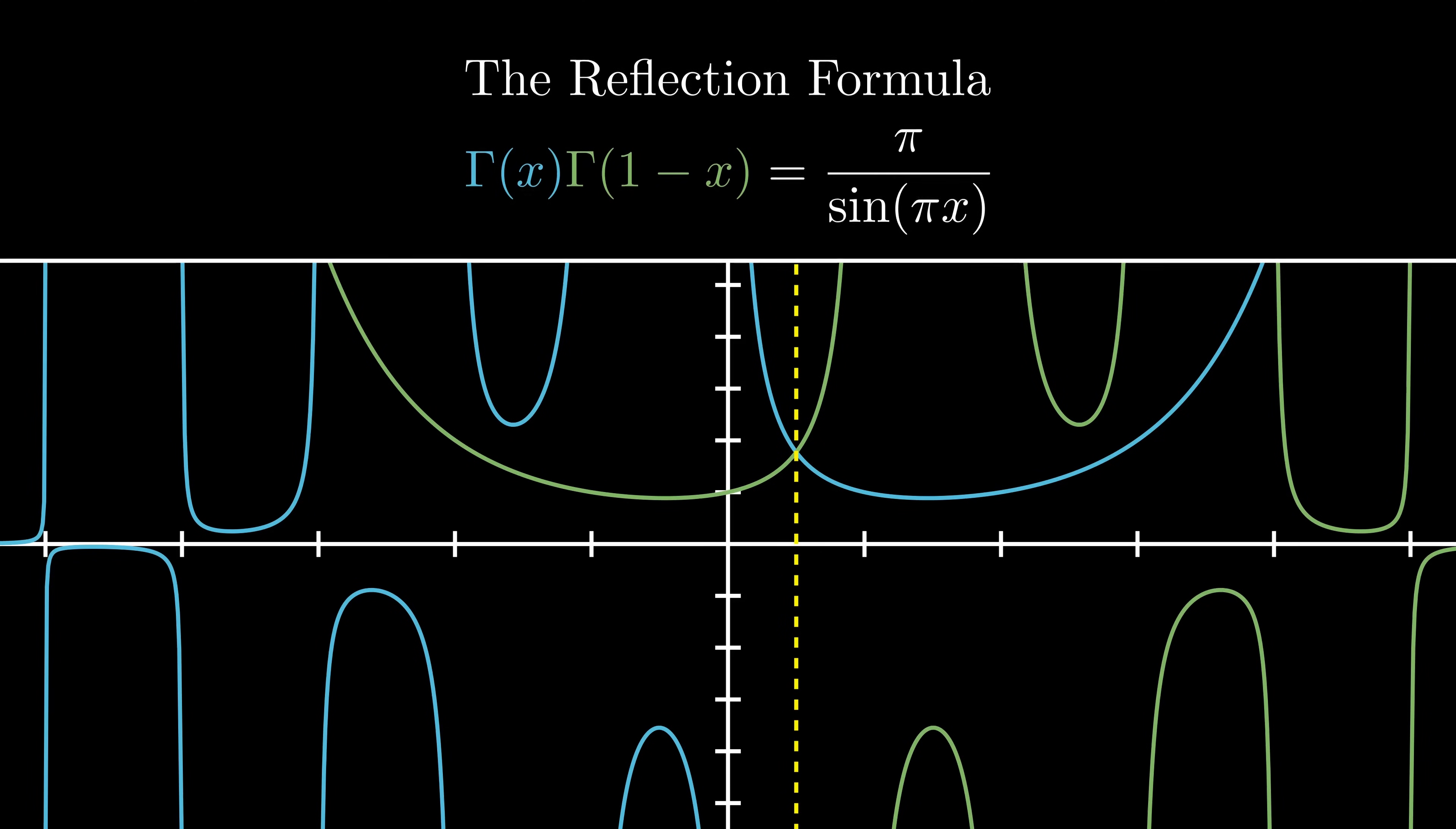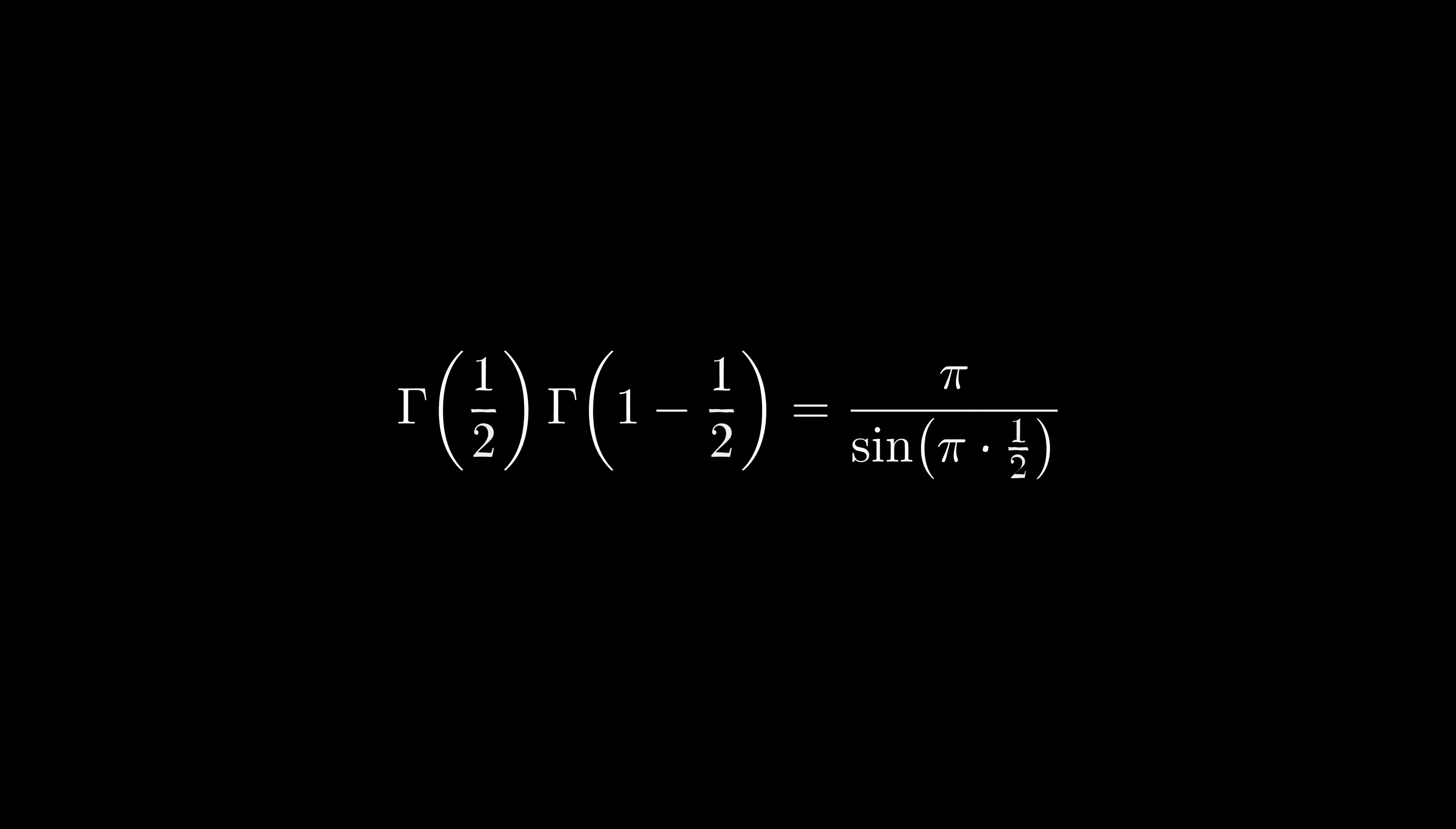There's one cool special case that I just have to mention. If x is 1 half, then 1 minus x is also 1 half. So we get gamma of 1 half squared is equal to pi over sine of pi over 2. But since sine of pi over 2 is 1, we're just left with pi, which means that the gamma function of 1 half is the square root of pi. Now, technically, factorials are only defined on the natural numbers, but it's fun to relate this to the factorials anyway. Since the gamma function is the factorial function offset by 1, we can use the recursive formula to arrive at a great fun fact. 1 half factorial is the square root of pi over 2.